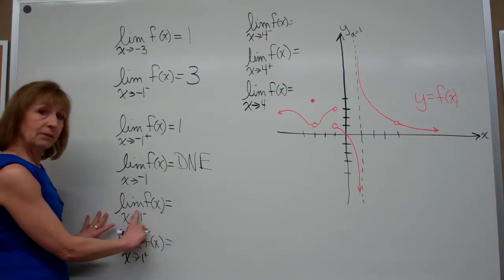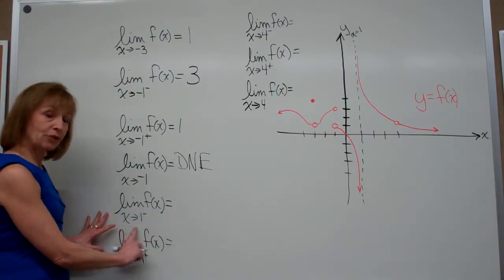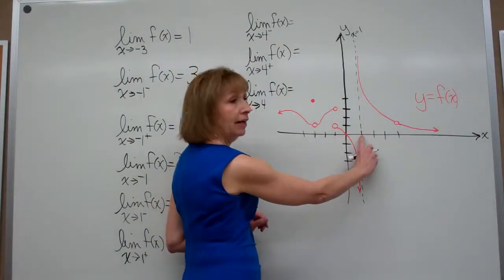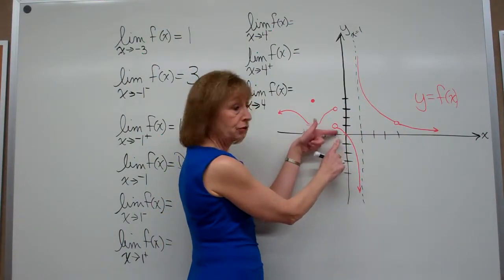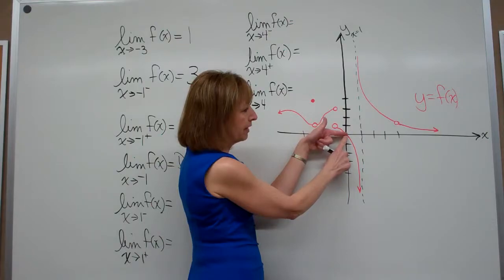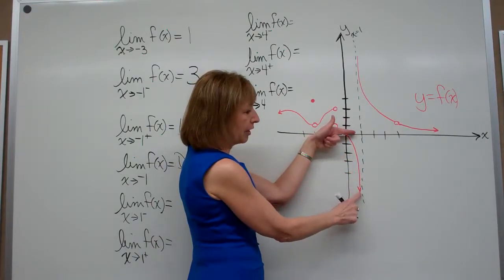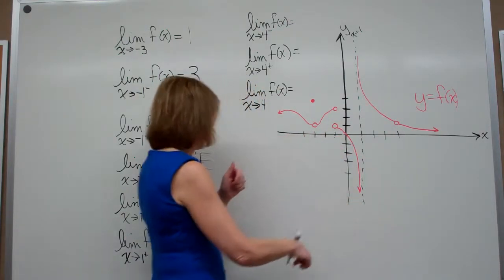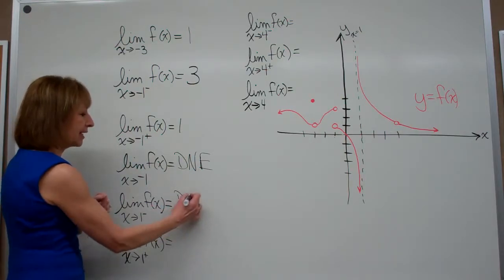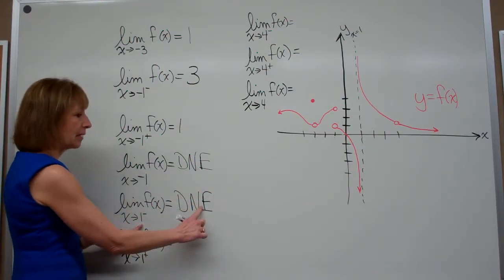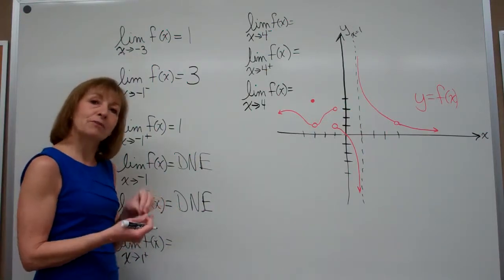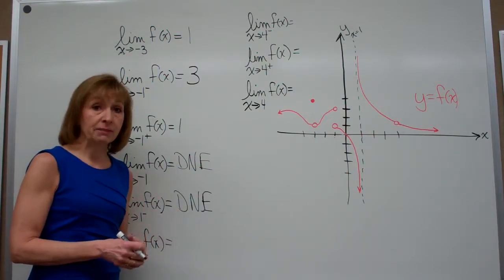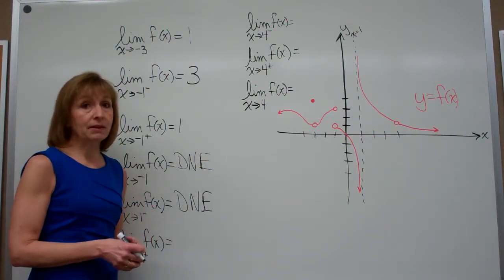The next one is the limit of my function values as x approaches 1 from the left. I find my x value of 1 and get closer and closer to it approaching from the left. As I notice, my function values are going down forever along this vertical asymptote, so they're going off to negative infinity. The limit does not exist because it doesn't approach a specific fixed number — it goes off to negative infinity. That's called unbounded behavior, and it's another way that limits don't exist.